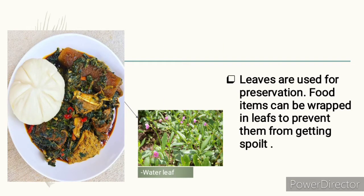Leaves are also used for preserving foods. Food items can be wrapped in leaves to prevent them from getting spoilt. For instance, this is a water leaf — so beautiful! You can use it to preserve other food items so they won't get spoilt. Have you tasted water leaves, pumpkin leaves, or bitter leaves before?